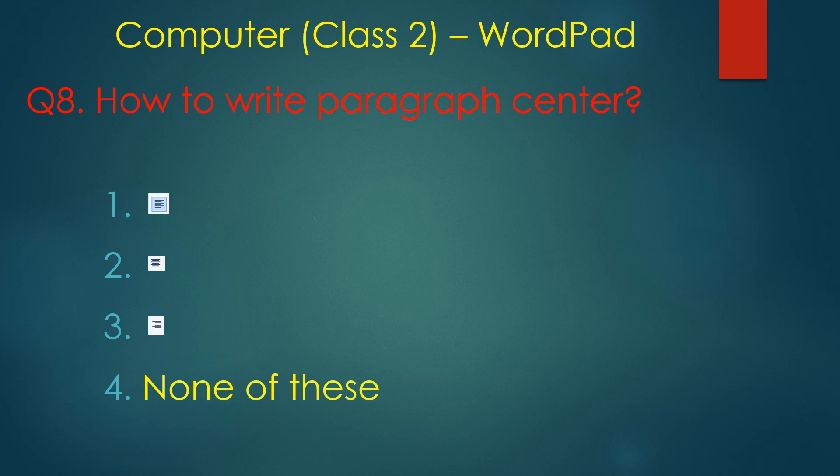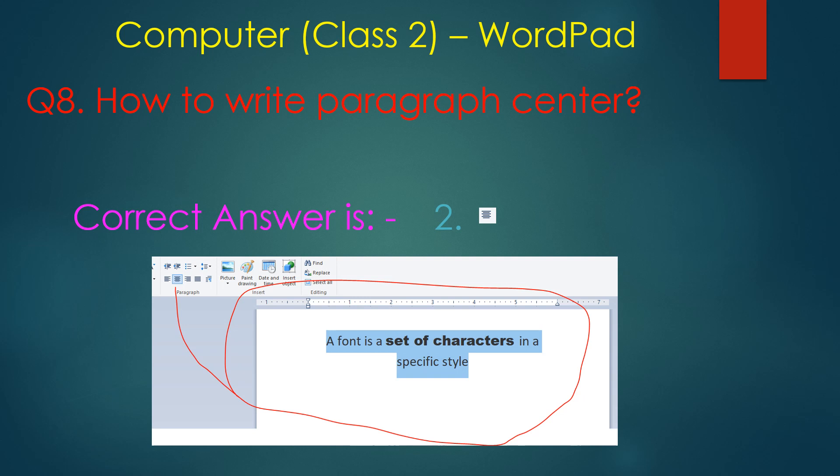To center text in WordPad, see this center icon. This icon displays the text centered. You select the text and click on this icon, and all text will be centralized.